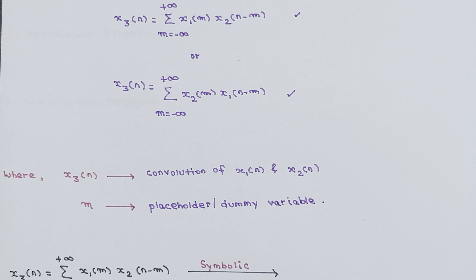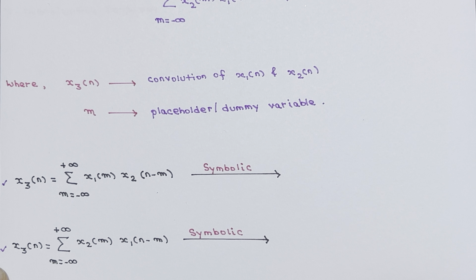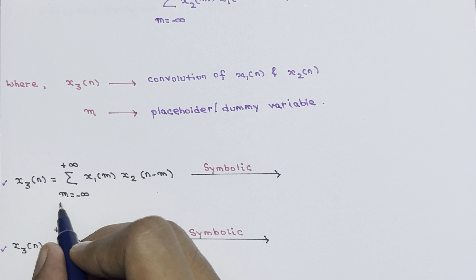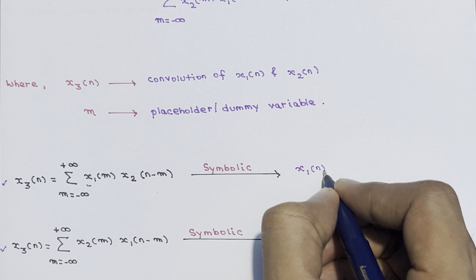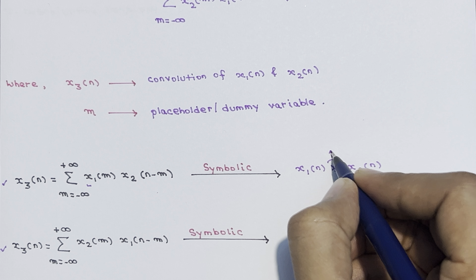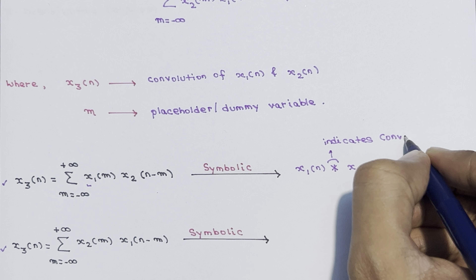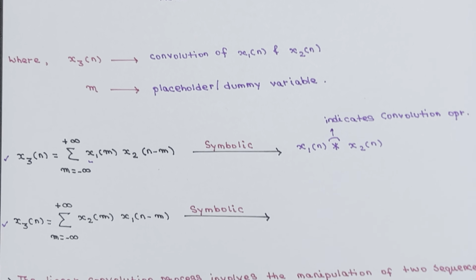Now let's talk about the symbolic representation of the convolution relation. The expression x3(n) = summation of x1(m) · x2(n−m) over m from minus infinity to plus infinity can be written symbolically as x3(n) = x1(n) * x2(n), where the asterisk indicates the convolution operation.